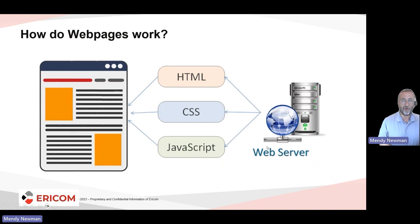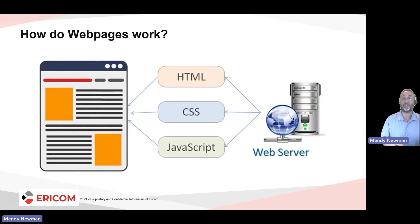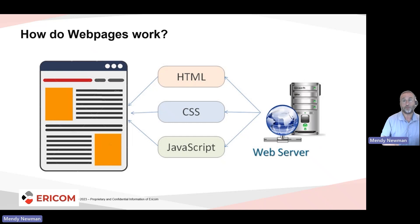When you open your web browser and try to browse to any domain on the web — google.com, cnn.com, or any other website — behind the scenes, what's actually happening is your web browser is making requests to a web server somewhere on the internet, asking that web server to send it a series of files. These files, when combined together by a web browser, will actually render the web page in your browser so that you can view the content.